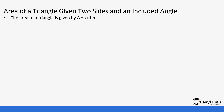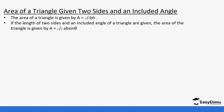Area of a triangle is usually given as a half base times height. So if you are given two sides and an angle, then the area becomes a half ab sine theta. In this case, a will be this side and b will be this side. The angle is in between those two sides — that's the rule. You need to ensure that the angle is always between those two sides. Let's do a few examples and see how we can apply this formula.